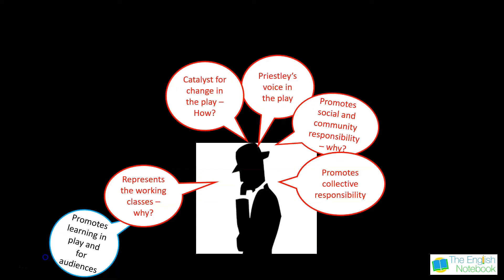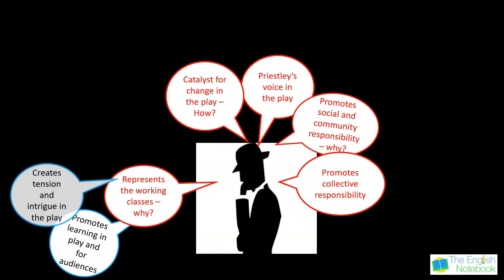He wanted to use his authority and control as a character to lead the Birlings to some understanding of their role in Eva's death. As a result of his role, he also creates tension and a lot of intrigue in the play, keeping audiences at the edge of their seats because he has a line of questioning that interrogates each member of the Birling family and Gerald Croft.